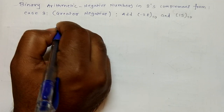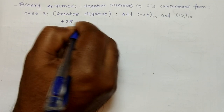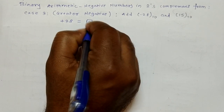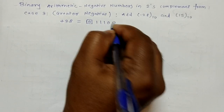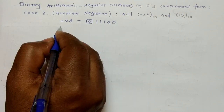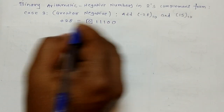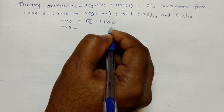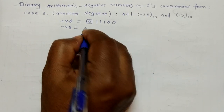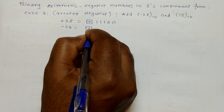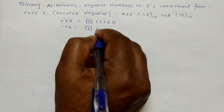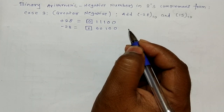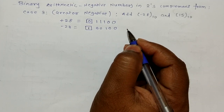First, I will write +28 in binary: 0 1 1 1 0 0. Now if you want to represent this as a negative number, you have to take the two's complement of it. The two's complement of 28 becomes 1 0 0 1 0 0.